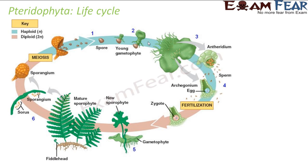Here we are talking about the life cycle of a fern. The plant here is the sporophyte — this is the mature sporophyte, which is nothing but the plant itself. These are the ferns, and they will have sporangia, and the sporangia will consist of the spores.